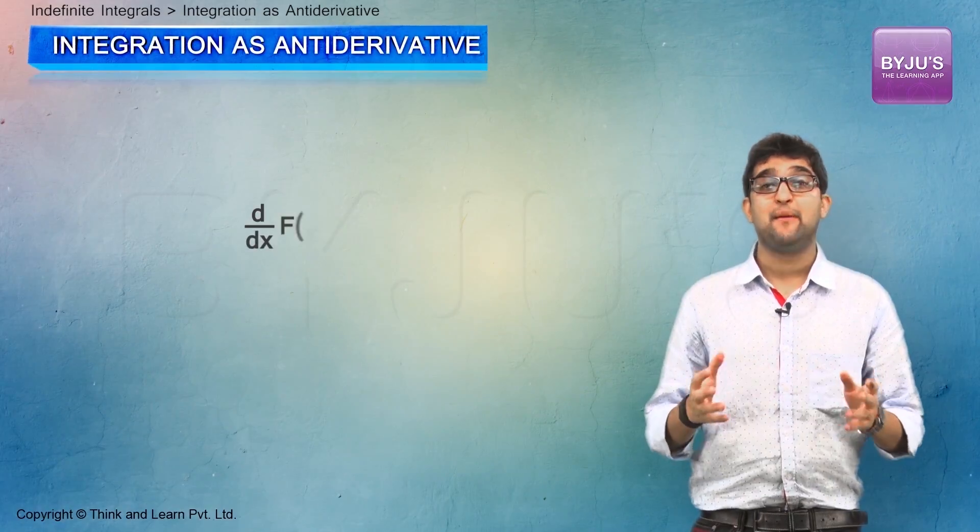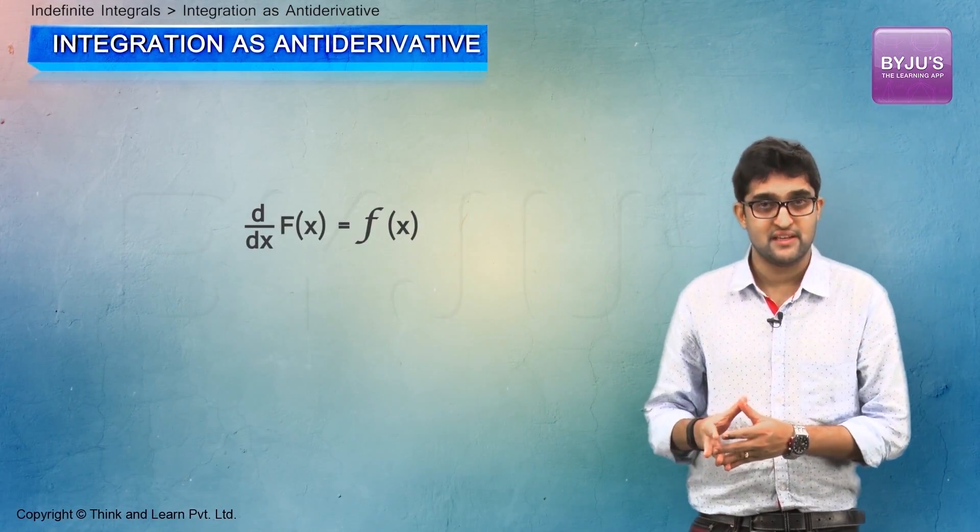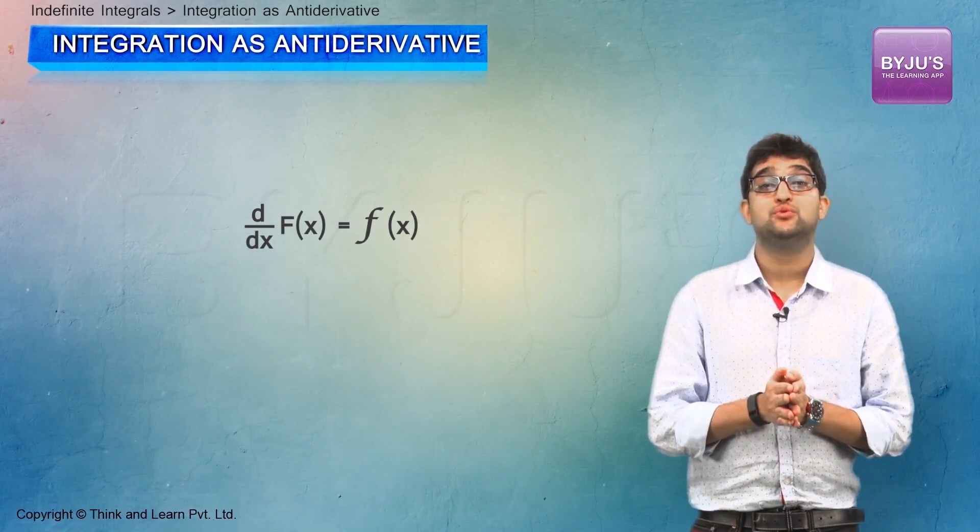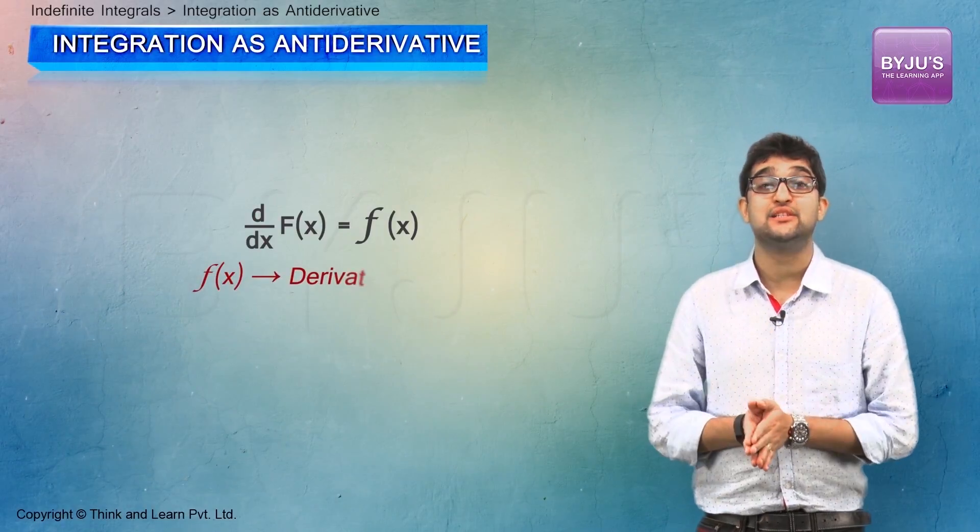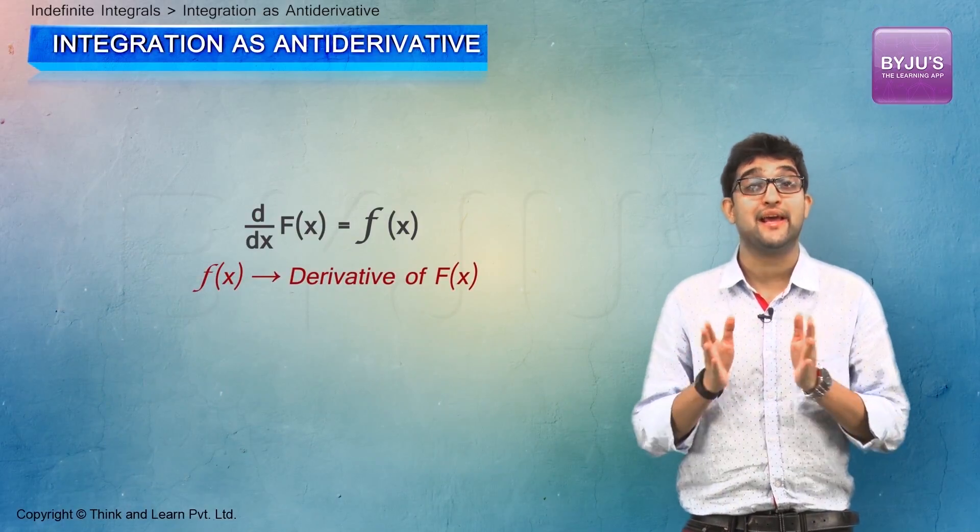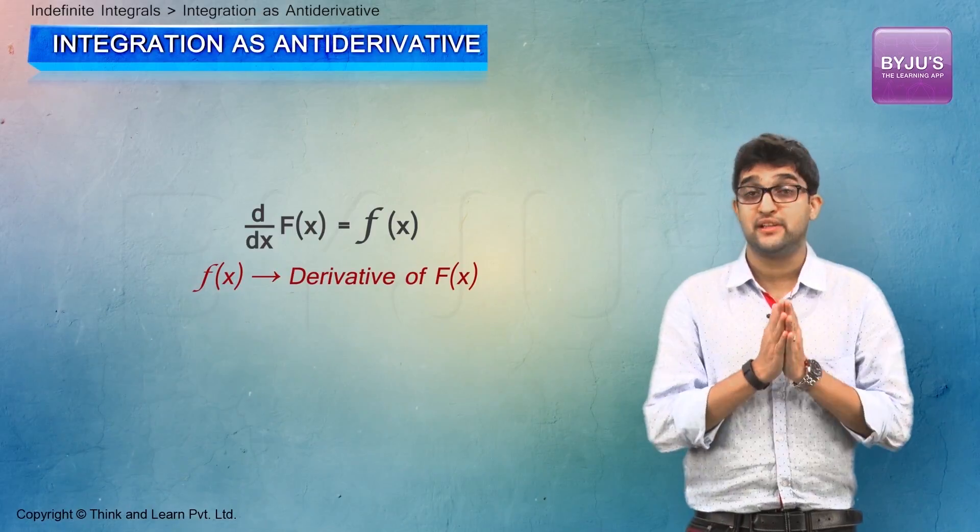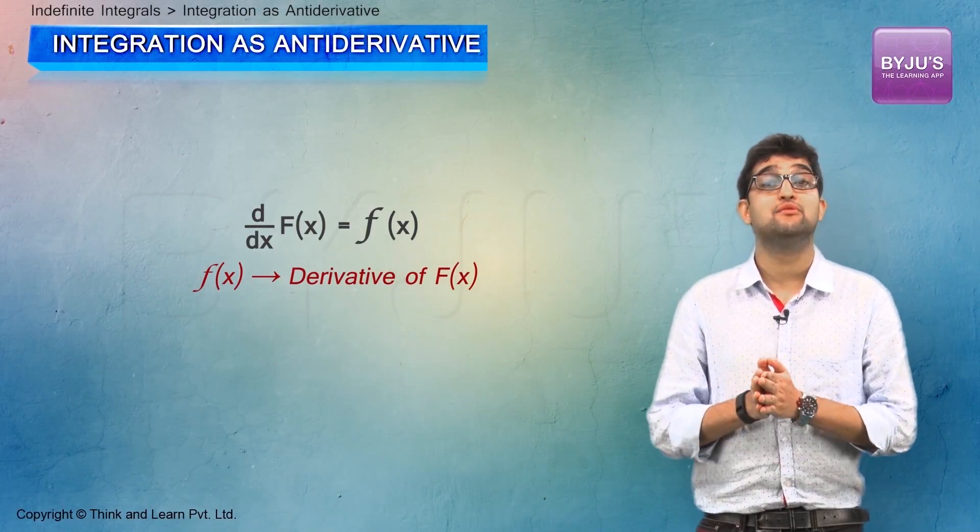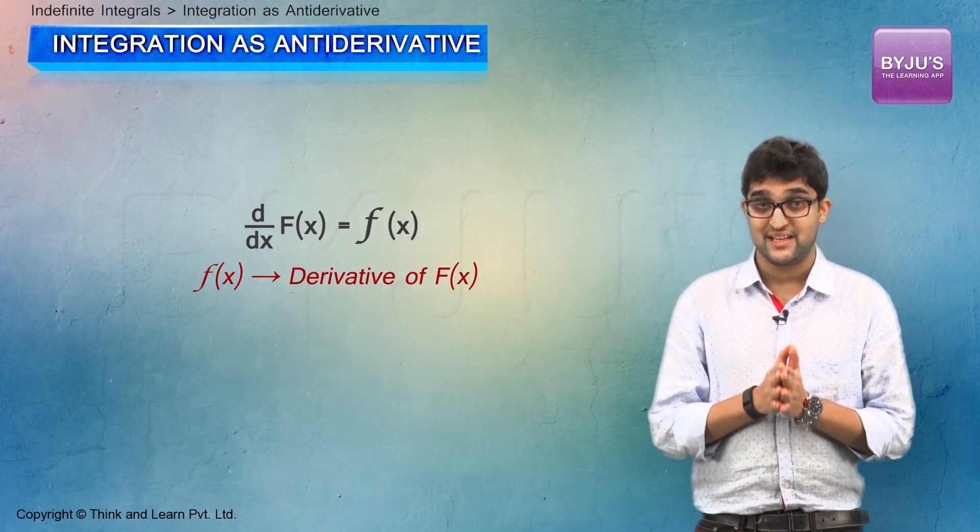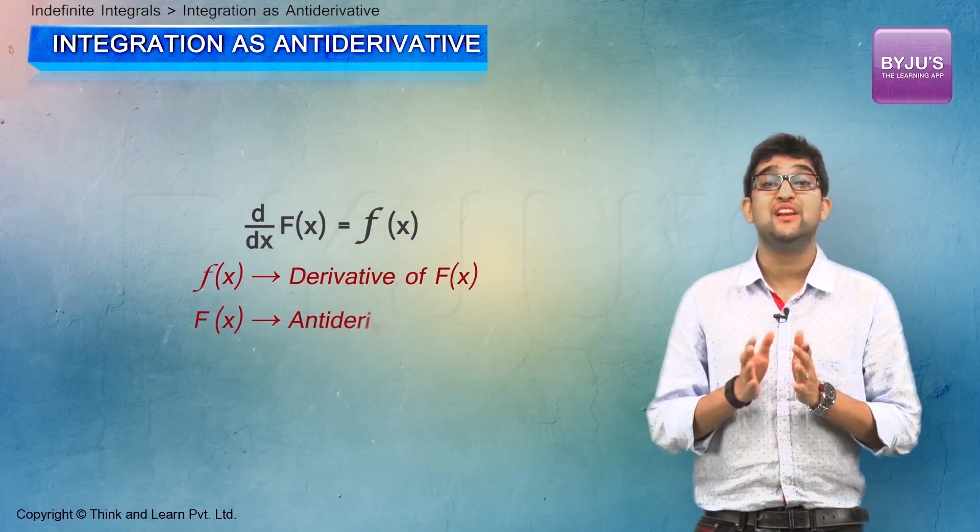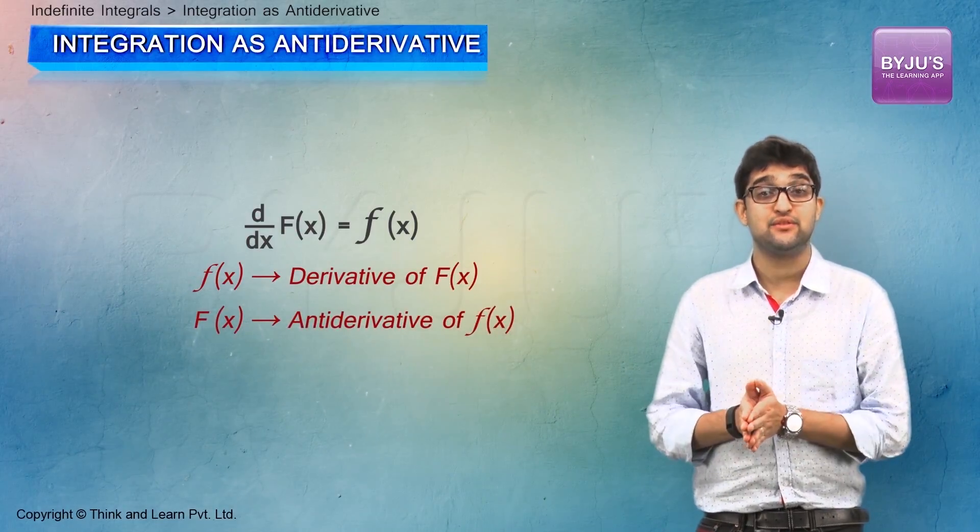If d by dx of capital F of x is f of x, then we refer to f of x as the derivative of the function capital F of x. Now since f of x is the derivative of capital F of x, we can say that capital F of x will be the antiderivative of f of x.